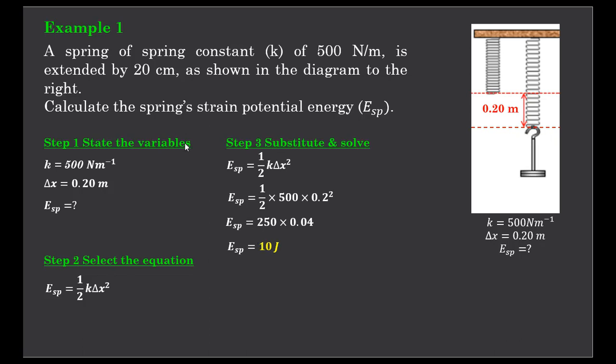So for this particular question, if we've got a spring with a spring constant of 500 newtons per meter that's extended by 20 centimeters, it will store the strain potential energy of 10 joules.